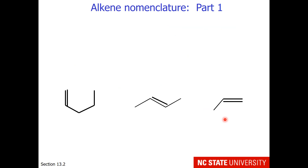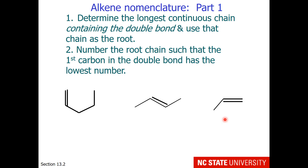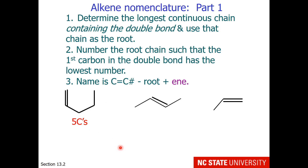Here are some examples. We determine the longest continuous chain containing the double bond, number it so the first carbon of the double bond has the lowest number, then combine that number, the root, and '-ene.' This first molecule has 5 carbons and the double bond starts on the first carbon, so we call it 1-pentene.